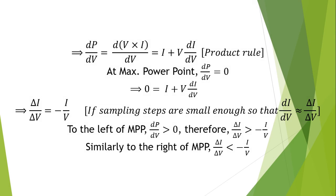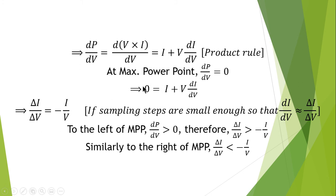Looking at the mathematics, we can write that the derivative of power with respect to voltage is given by P = VI, and using the product rule, the rate of change of power with respect to voltage is given by: dP/dV = I + V × (dI/dV). At the maximum power point, dP/dV = 0, so the equation becomes: 0 = I + V × (dI/dV).